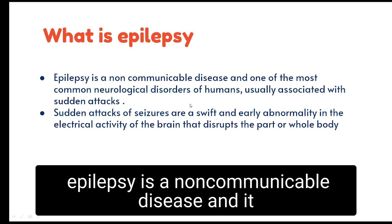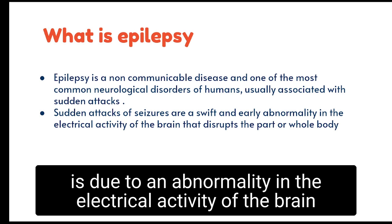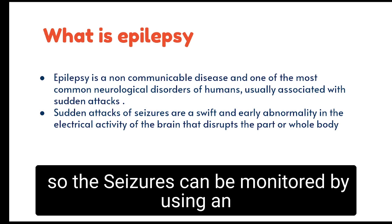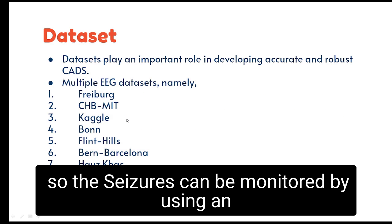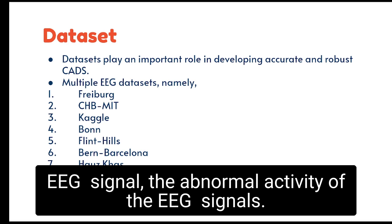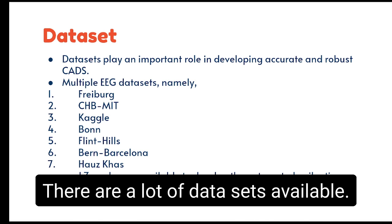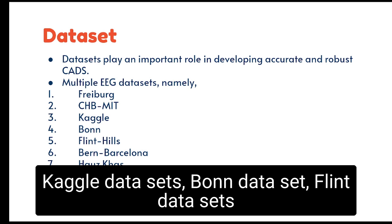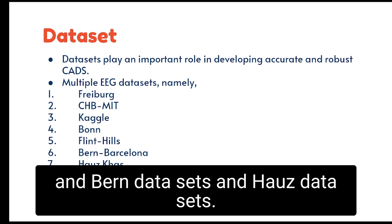Epilepsy is a non-communicable disease characterized by abnormality in the electrical activity of the brain, which disrupts the entire part of the body. Seizures can be monitored using EEG signals by detecting abnormal EEG activity. There are many datasets available, such as CHB, Kaggle, Bonn, Flynn, Bern, and Haas datasets.